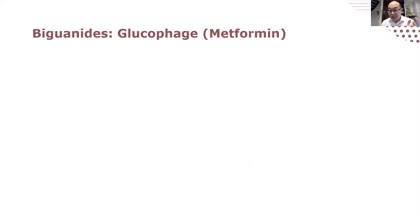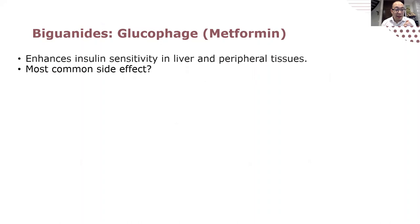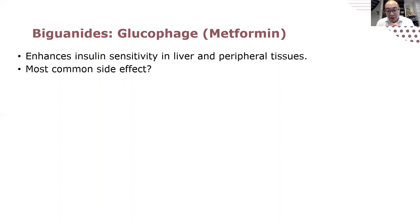How does metformin work? It enhances insulin activity in the liver, which results in a reduction in hepatic glucose production. Remember, there's up to 75 grams of glycogen in the liver that can be broken down into glucose. It's really important that the liver gets the insulin signal that there's plenty of sugar in the blood and doesn't need to break down glycogen and dump it into the bloodstream.